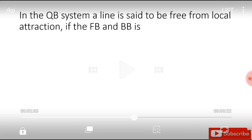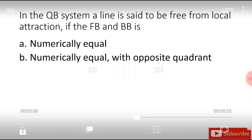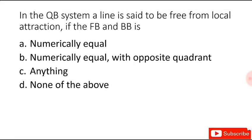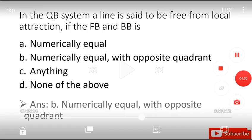In QB system, a line is said to be free from local attraction if the FB and BB are numerically equal, numerically equal with opposite quadrant, anything, or none of the above. And the answer is numerically equal with opposite quadrant.